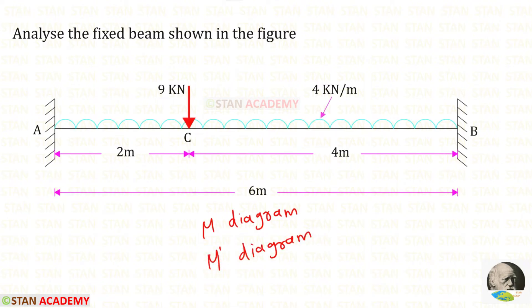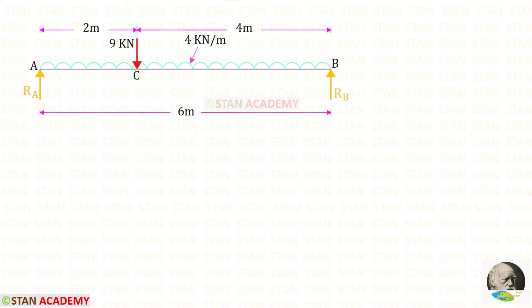To draw the mu diagram we have to convert the fixed beam into a simply supported beam. Here you can see that I have converted the fixed beam into a simply supported beam. Now let us find the vertical reactions RA and RB in this beam.